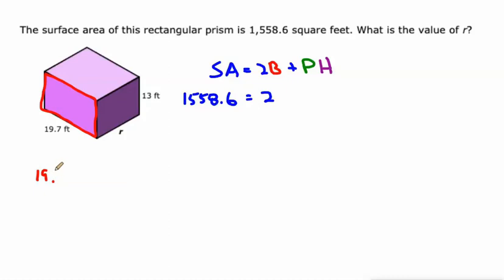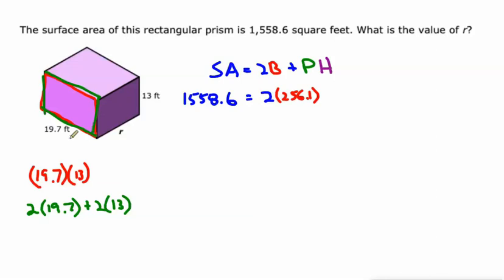As far as the area of the base, let's use this as our base because I can figure out the area. It's 19.7 times 13, and 19.7 times 13 is 256.1. The perimeter would be 2 times 19.7 plus 2 times 13. 2 times 19.7 plus 2 times 13, that's 65.4.